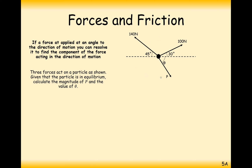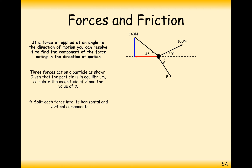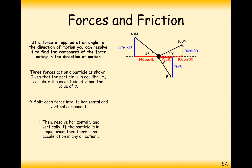Moving on to the next question, still looking at the particle from above. Three forces act on the particle. Given that the particle is in equilibrium, calculate the magnitude of P and the value of theta. We have two unknowns, so we'll need simultaneous equations — one from resolving horizontally and one from resolving vertically. Since the particle is in equilibrium, there's no acceleration in any direction and all forces perfectly cancel each other out.